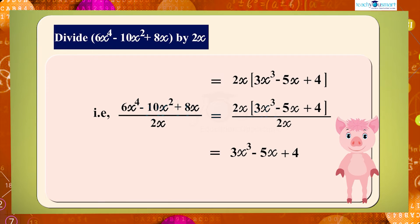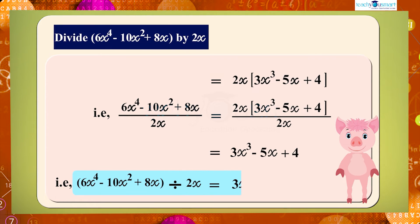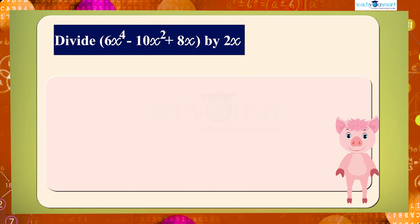That is, 6x raised to 4 minus 10x squared plus 8x divided by 2x gives 3x cubed minus 5x plus 4. Also, we can do this in another method.